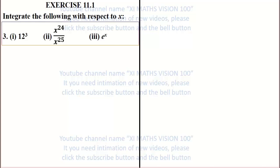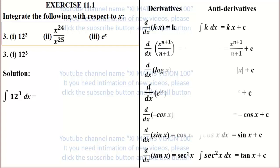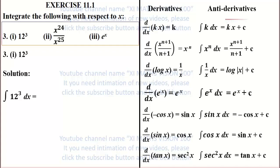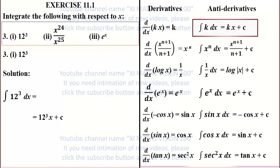Exercise 11.1, question number 3, subdivision 1: integrate 12 cubed. Solution: 12 cubed is a constant. Using the formula — integral of k dx equals k times x plus c — therefore the answer is 12 cubed times x plus c.